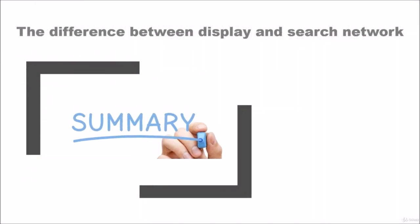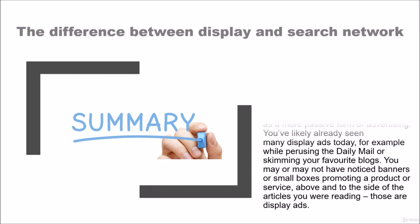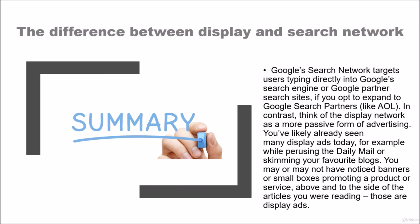In summary, let's look at the differences between the display and the search network. Google's search network targets users typing directly into Google's search engine or Google partner search sites — that's if you opt to expand to Google search partners like AOL. In contrast, think of the display network as a more passive form of advertising. You've likely already seen many display ads today — for example, while browsing the Daily Mail or skimming your favourite blogs, you may have noticed banners or small boxes promoting a product or service above and to the side of the articles you're reading. So, these are display ads.